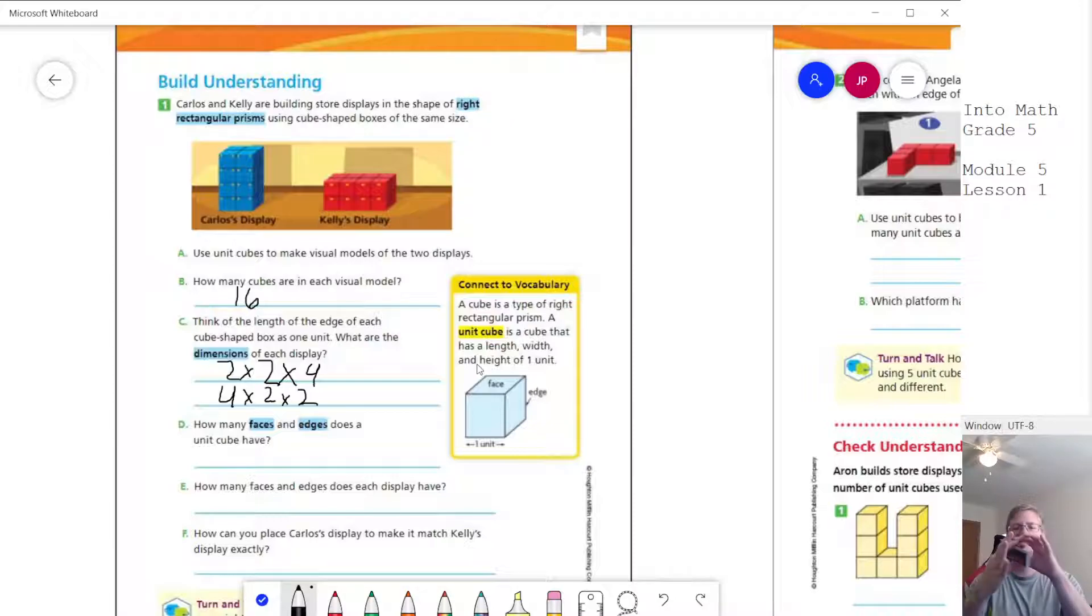And then we have six faces. So front, back, top, bottom, left, and right. Hopefully that showed up on camera. So we're going to have 12 total edges and six total faces. And then that would give us the same number for the display.